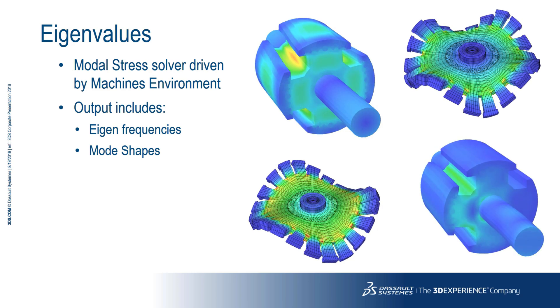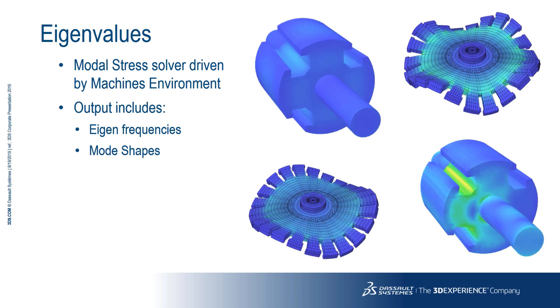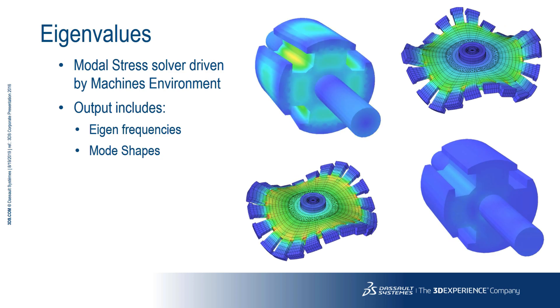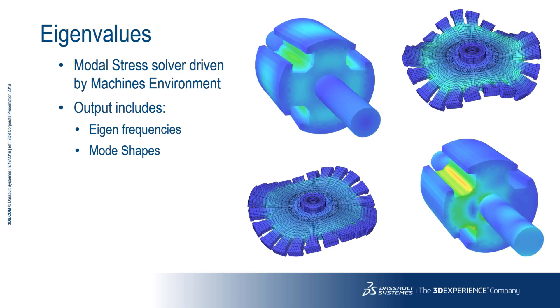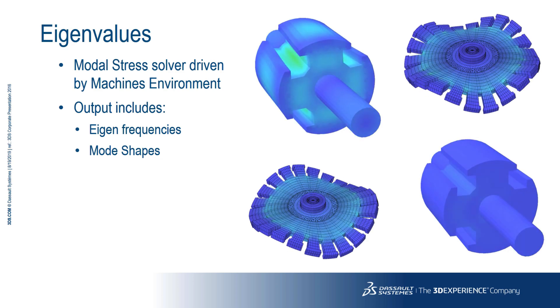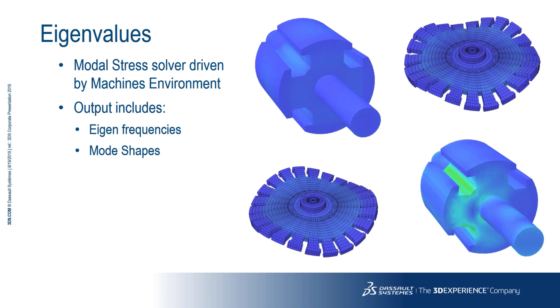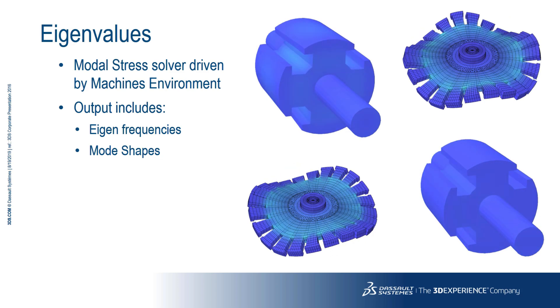The eigenvalue analysis can be applied to all of the machines available in the 3D machine's environment. The analysis uses the modal stress solver to calculate the eigenvalues and eigenvectors for the stator and or rotor. The output from this analysis is a list of eigenfrequencies found in the intervals specified by the user, along with images showing the displacements for each of the modes.